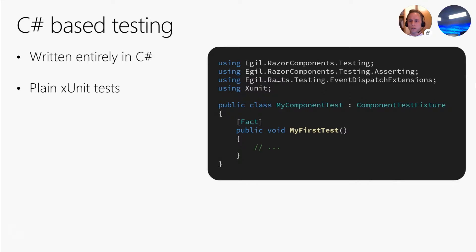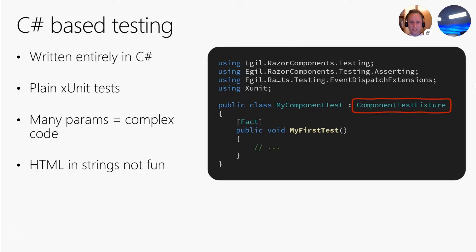On the plus side, in this style everything is written in C#. It is just a regular XUnit test like the one you see on the slide, so everything should feel familiar. You are required to inherit from the component test fixture type, which is a test context with helper methods to make it easier to provide input to the component under test. On the minus side, even with the helpers, if you have a component that takes a lot of parameters, the code used to render the component can become quite complex and unwieldy, especially if you also have to pass a child component with many parameters.